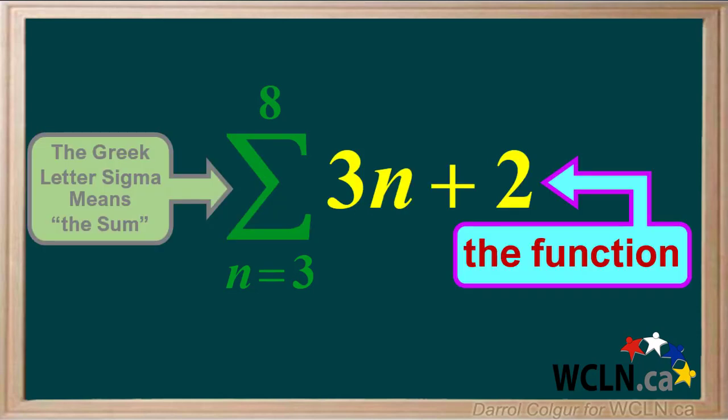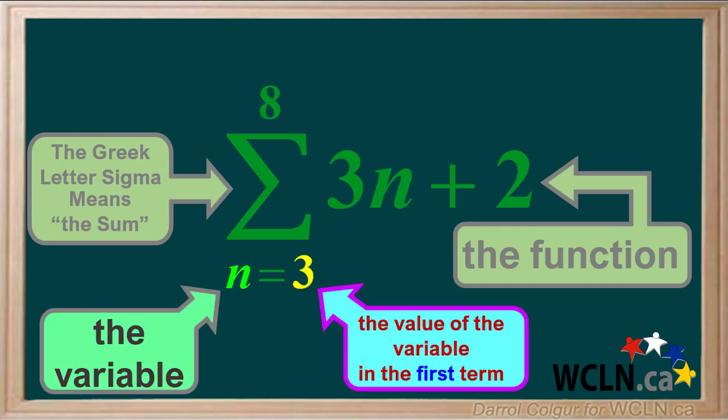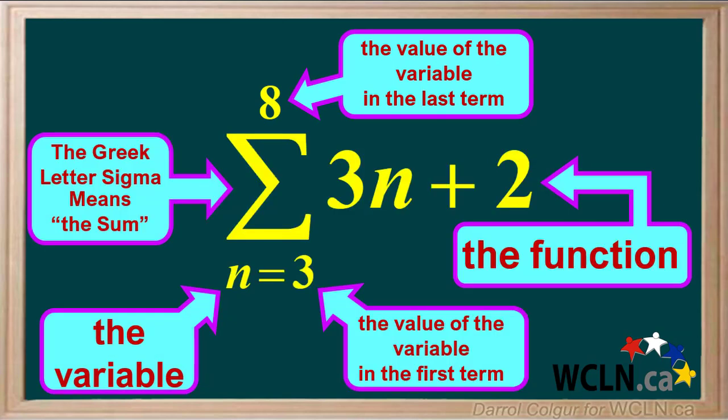The expression to the right of the sigma symbol is called the function. The letter below sigma is the variable in the function. The number below sigma is the value of the variable in the first term of the series. The number on top of sigma is the value of the variable in the last term. Here's a summary of all the parts in sigma notation — make sure you're aware of what each of these mean.